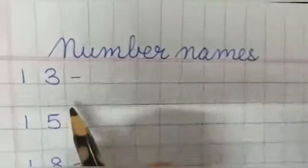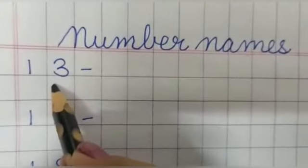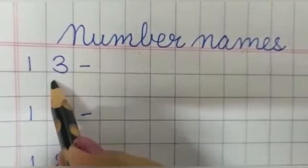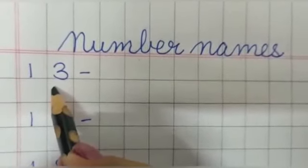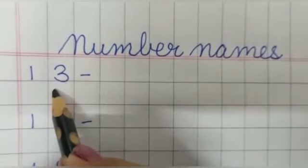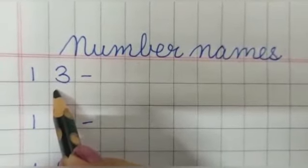Now, tell me, which number is this? 13. Which number is this? 13. And spelling of 13 is T-H-I-R-T-E-E-N.